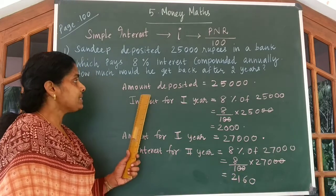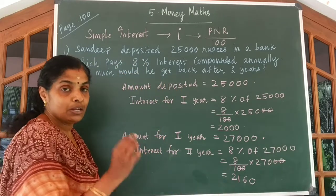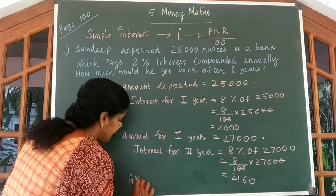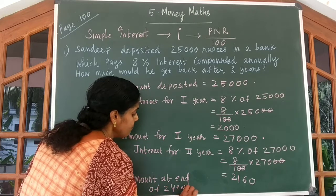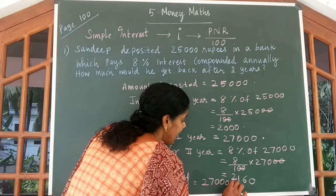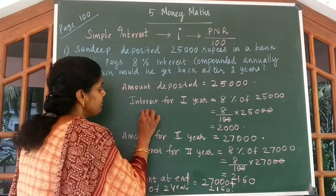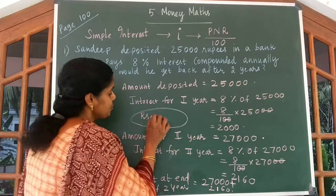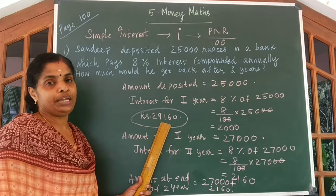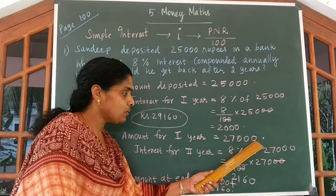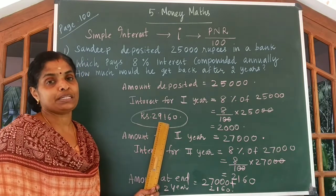At the end of 2 years, Sandeep would be getting ₹27,000 plus ₹2,160. The amount at the end of 2 years is equal to 27,000 added to 2,160, which gives you ₹29,160. So at the end of 2 years, Sandeep will be getting ₹29,160.